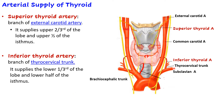The second artery is the inferior thyroid artery, a branch of the thyrocervical trunk, which in turn is a branch of the first part of the subclavian artery. The other two branches of the thyrocervical trunk are the transverse cervical and suprascapular arteries, which go to the posterior triangle of the neck. The inferior thyroid artery supplies the lower one-third of the lobe and the lower half of the isthmus.